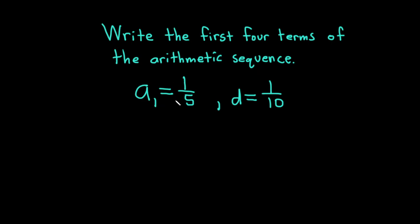We're told that a sub 1, which is the first term, is equal to 1 over 5 and d, which is called the common difference, is equal to 1 over 10. Let's go ahead and carefully work through this solution.